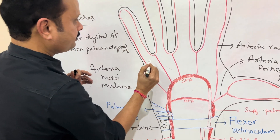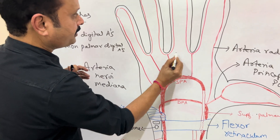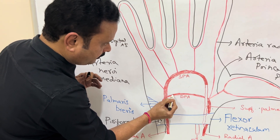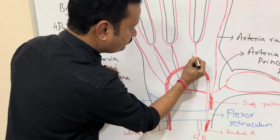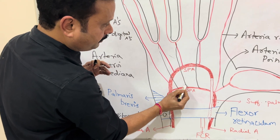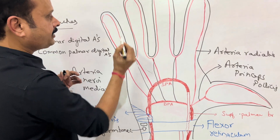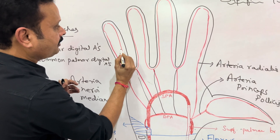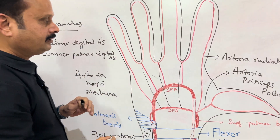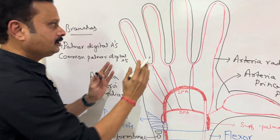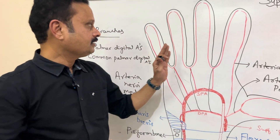These remaining three common palmar digital arteries run distally and, on reaching the adjoining web spaces between the three fingers, join with the palmar metacarpal arteries of the deep palmar arch. After joining, each one gives off two proper digital arteries to supply the adjoining sides of the fingers. Through the superficial palmar arch, except for the radial side of the index finger and the thumb, the rest of the adjoining sides of the fingers are supplied.